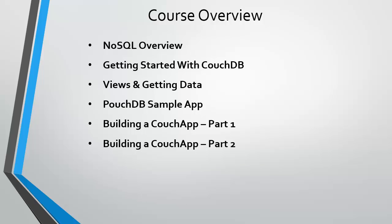Of course, we'll have an overview where we'll talk a lot about NoSQL — what it is, advantages, things like that. Getting started with CouchDB, we'll look at the service, the API, and installation. Then we'll talk about views and getting data — how we can grab data and sort it. Then PouchDB, where we'll be building a sample application which is the to-do list. And then we'll be building a CouchApp which will be an address book, and that'll take up two chapters — it'll be a fairly decent-sized application.